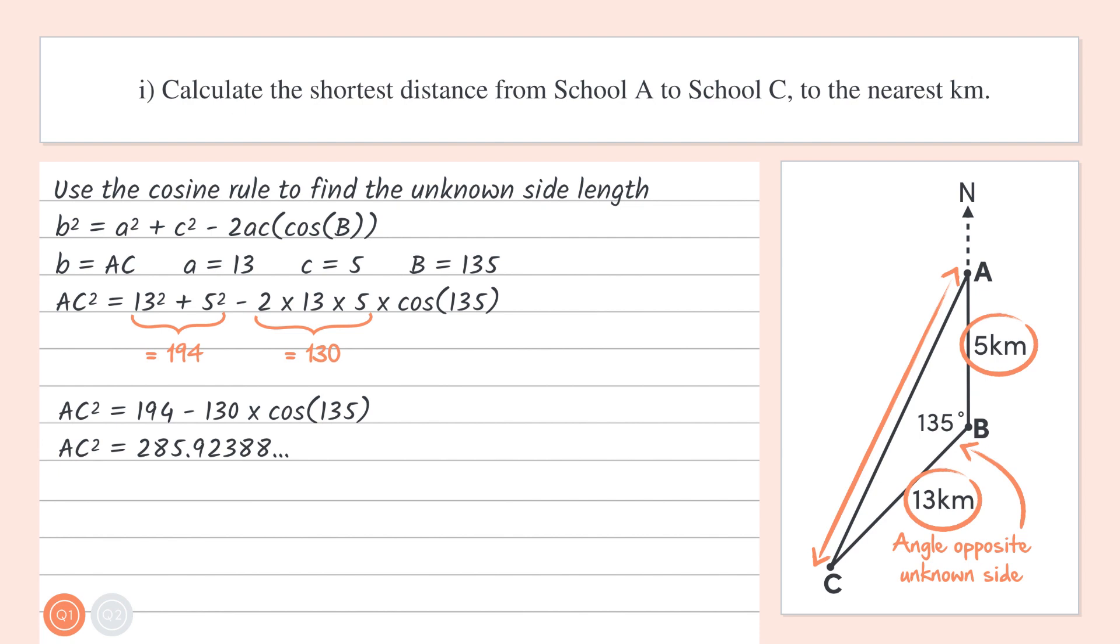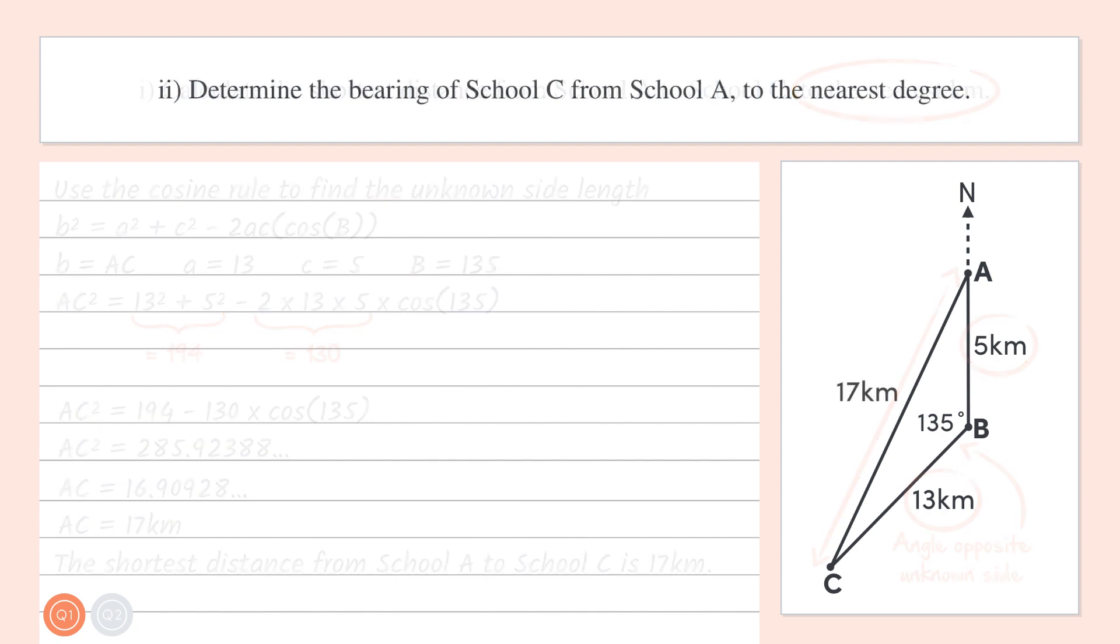Then, if we take the square root of both sides, we get AC by itself, and 16.90928 on the right. The question is asking for the answer to the nearest kilometre, so let's round this up to AC equals 17 kilometres. This means that the shortest distance from school A to school C is 17 kilometres. Bingo! Let's try part two.